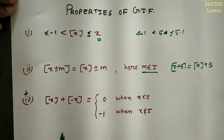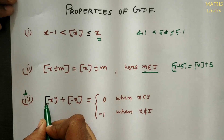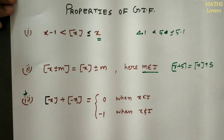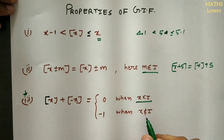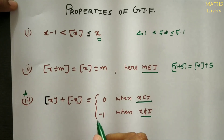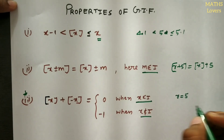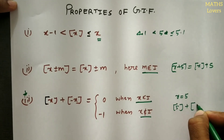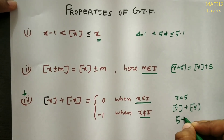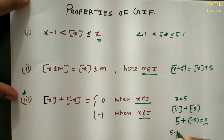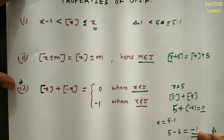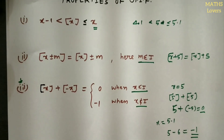The third property is very important and used in many questions: [x] + [-x] equals 0 if x is an integer, and equals minus 1 if x is not an integer. For example, if x = 5, then [5] + [-5] = 5 + (-5) = 0. But if x = 5.1, then [5.1] = 5 and [-5.1] = -6, so their sum is -1. This proves the property.